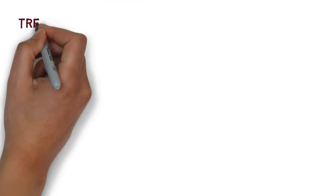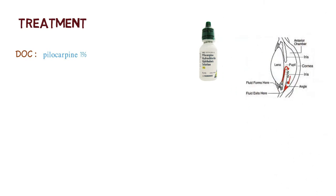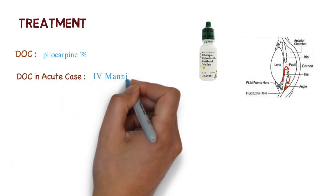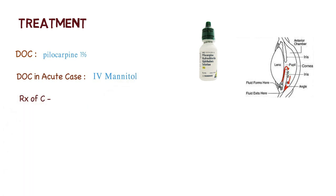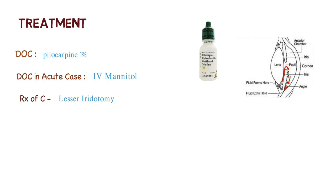The treatment is straightforward. The drug of choice is pilocarpine 1%, which is a miotic. Its mechanism of action is to contract the pupils, allowing excess fluid to drain from the eye and reducing intraocular pressure. The drug of choice in acute cases is IV mannitol, which is a diuretic. The treatment of choice overall is laser iridotomy — it creates a hole in the outer edge of the iris, opening the angle in the majority of cases, exposing the trabecular meshwork and enhancing fluid outflow.